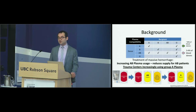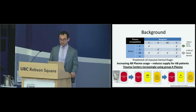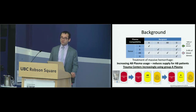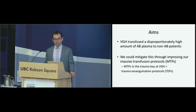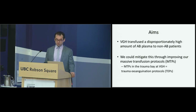This increasing AB Plasma usage is an issue since only 3 to 4 percent of donors are AB, and this reduces supply for AB patients. Trauma centers, including many in the United States, are starting to increasingly use group A Plasma in their massive transfusion protocols. This was most recently published in the STAT study in Transfusion last year, which involved about 14 to 15 level 1 trauma centers that used group A Plasma and found it was safe.